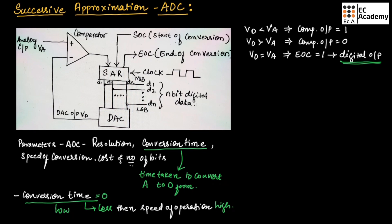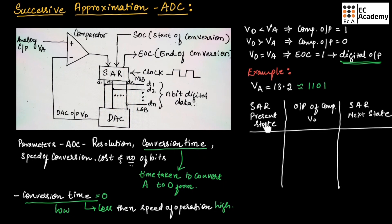Now let us consider an example to understand this. Let us consider the analog input as 13.2, which will be approximately equal to 1, 1, 0, 1 in digital form. To understand the operation, let us consider three columns: SAR present state, output of comparator V0, and SAR next state.